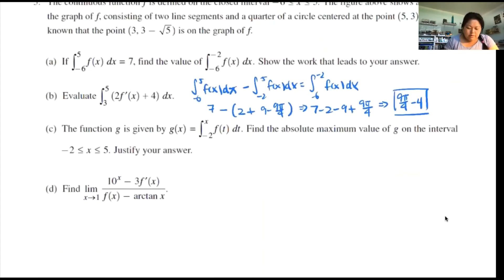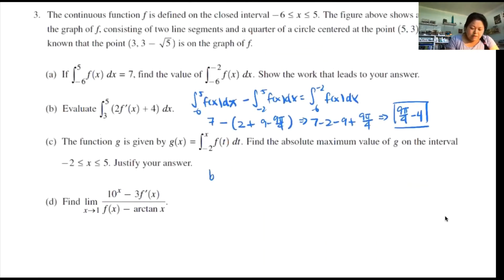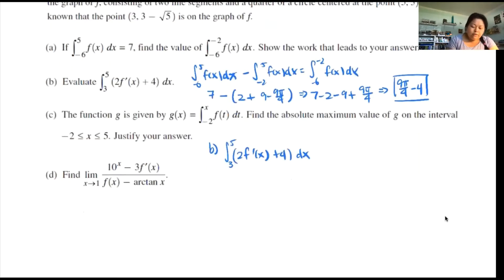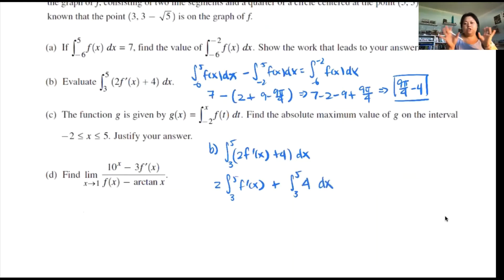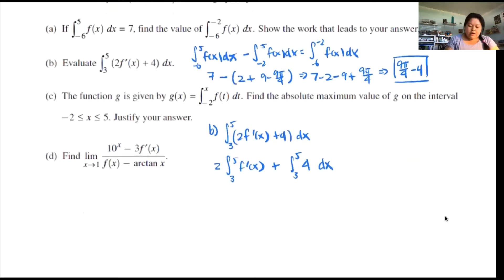Part B says: evaluate the integral from 3 to 5 of f prime of x plus 4 dx. Let's separate things out. The coefficient can go outside. We split the integral into the integral from 3 to 5 of f prime(x) dx plus 4 times the integral from 3 to 5 dx. For the first piece, the antiderivative of f prime is f(x), so we get f(5) minus f(3) — that's the Fundamental Theorem of Calculus.